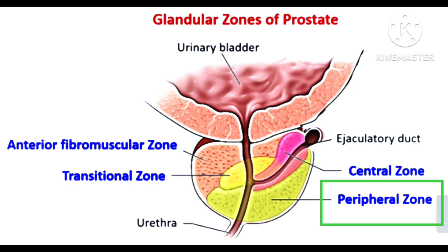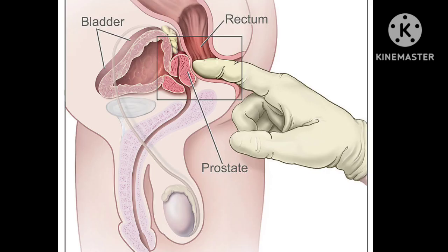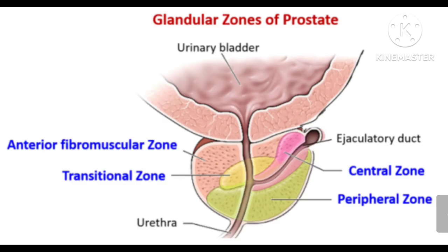The peripheral zone is felt during a digital rectal examination — it is manually palpated and is prone to carcinoma. BPH is usually caused by hyperplasia of the glands from the transitional zone of the prostate.